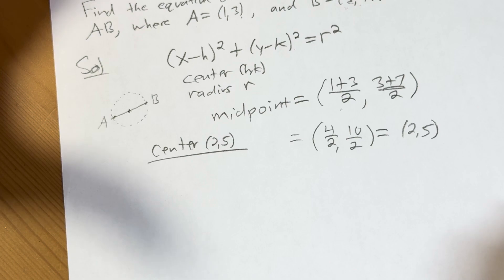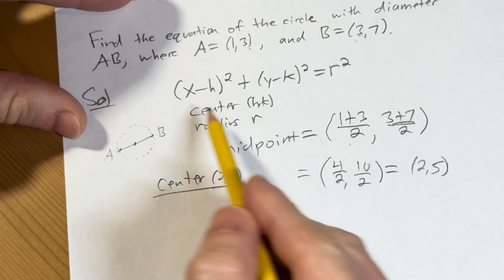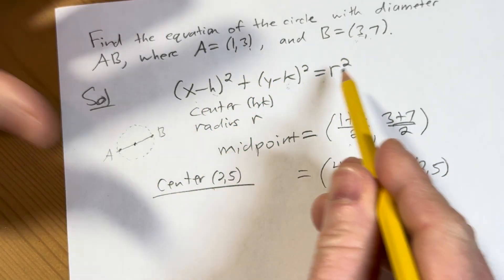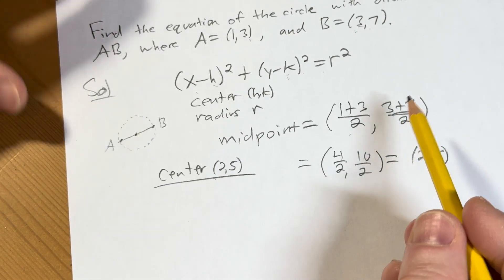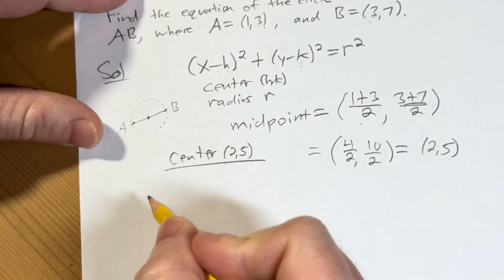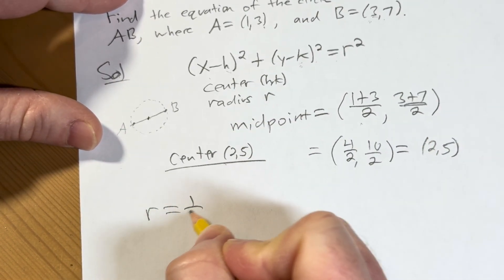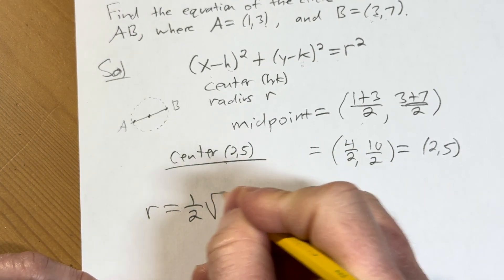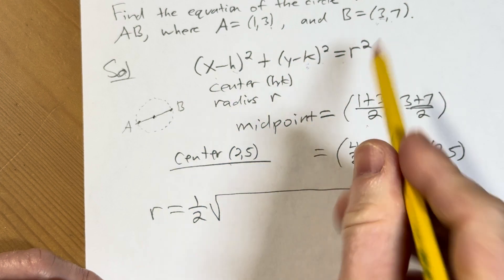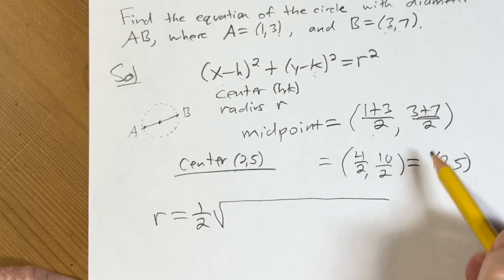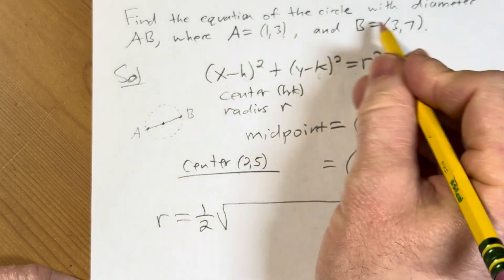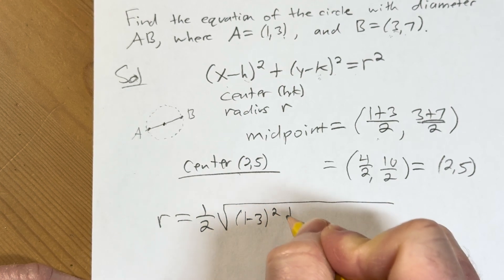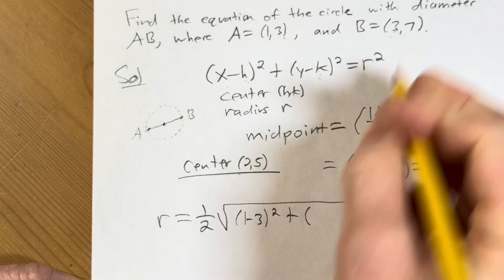You could plug in any of these points and solve for r. But let's do it this way. So the radius is 1/2 times the diameter. What is that? Well, the diameter is the distance between A and B. So using the distance formula, we subtract the x's, 1 minus 3, quantity squared, subtract the y's, 3 minus 7, quantity squared, right?